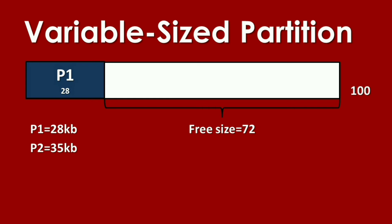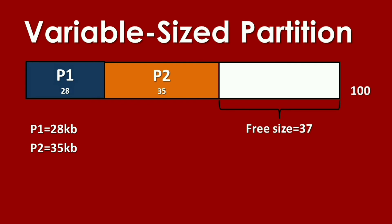Let's say Process 2 arrives with a size of 35 KB. Process 2 will allocate the free size of 72. It will use the free size and place Process 2 there. The 72 minus 35 will be the new free size. We have 37 as the free size. This means it can still be given to other incoming processes. Let's say we have Process 3.